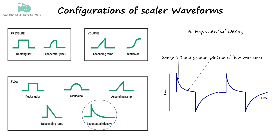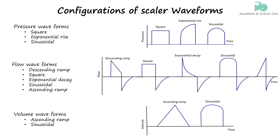Generally, the ascending and descending ramps are considered the same as the exponential ramps. If you have carefully analyzed the six basic waveform patterns discussed, you might notice that certain patterns appear only with some scalars. For example, square waveforms appear with pressure and flow, and descending ramps do not appear in pressure waveforms. The type of waveform also gives you an idea of the type of scalar you are looking at. We will revisit all these waveforms as we discuss individual scalars and modes of ventilation.